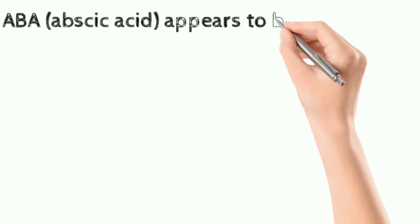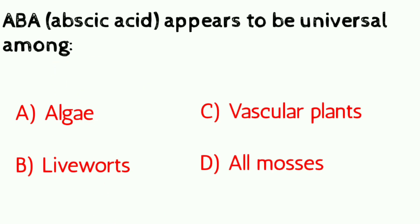Question number seven: abscisic acid appears to be universal among — a) algae, b) liverworts, c) vascular plants, d) all mosses. Correct answer is vascular plants.